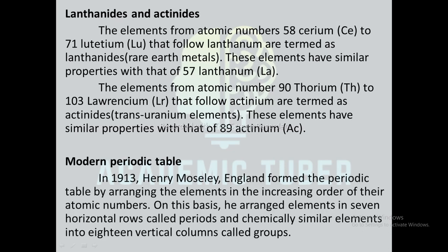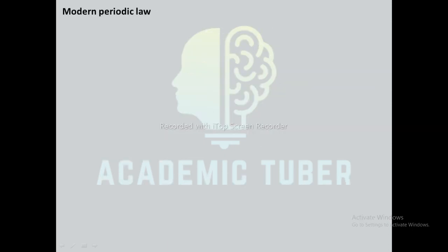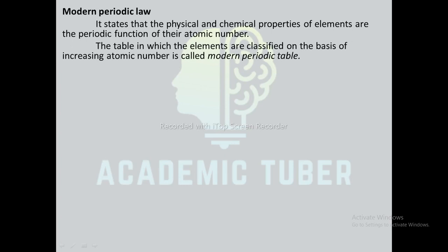Modern periodic table: in 1913, Henry Moseley from England formed the periodic table by arranging the elements in the increasing order of their atomic numbers. On this basis, he arranged elements in seven horizontal rows called periods and chemically similar elements into 18 vertical columns called groups. Modern periodic law states that the physical and chemical properties of elements are the periodic function of their atomic number.